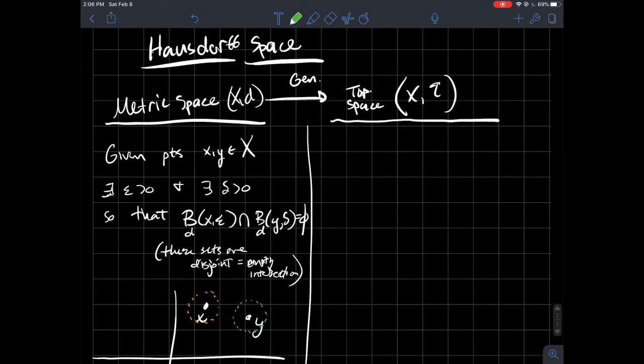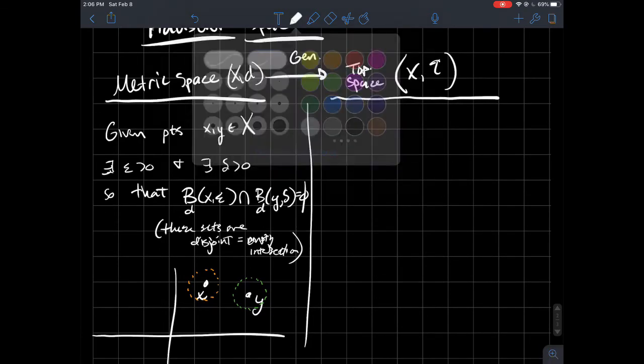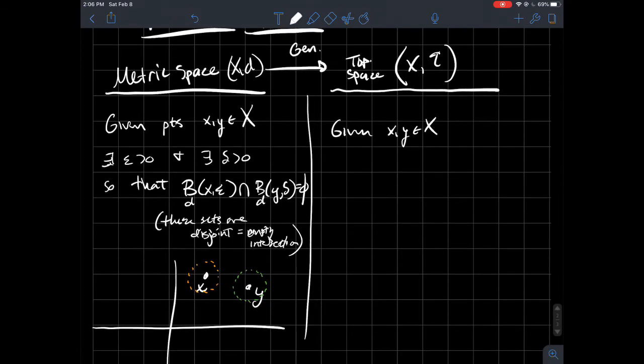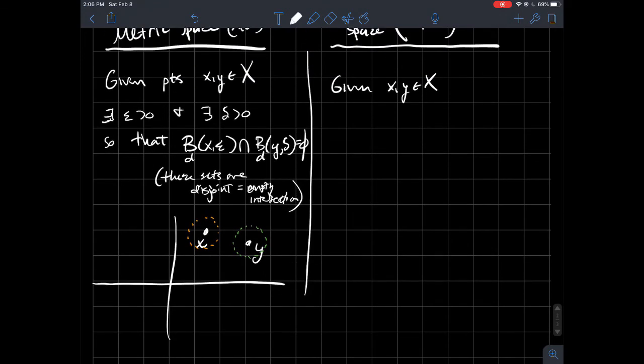And so in this case, I'll write: given x, y in X that are distinct. I probably should have said that before too. I just mean it'd be silly if x was equal to y. So given two different points in your set or in your space.